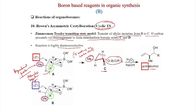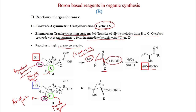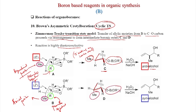For Z-crotyl boronate, the methyl and substituent are on the same side of the double bond, so methyl must occupy the axial position in the cyclic transition state, while R remains in the pseudo-equatorial position. After addition and H2O2/NH4OH workup, you get the syn-alcohol, where methyl and OH are on the same side.